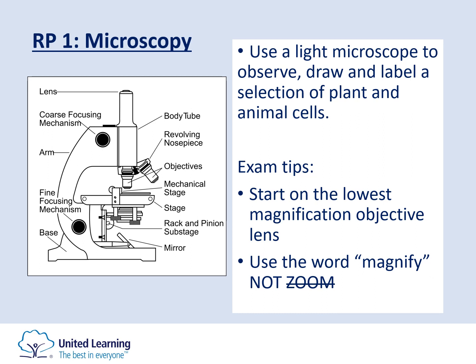An exam tip: when describing how to use a microscope, always start on the lowest magnification by selecting the lowest objective lens, which in our microscopes is four times. The reason for this is that it has the shortest length from the body tube down to the stage, which allows you to adjust the stage height without risking breaking the specimen or the slide underneath it.